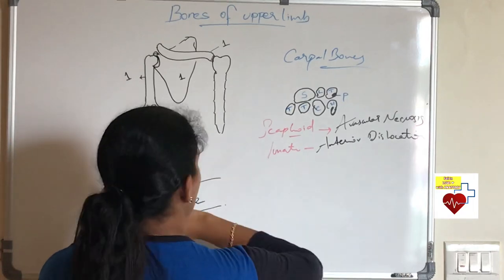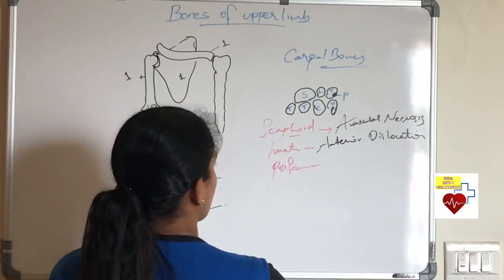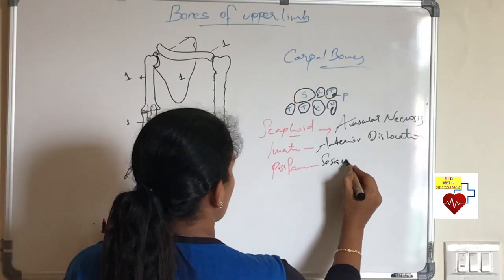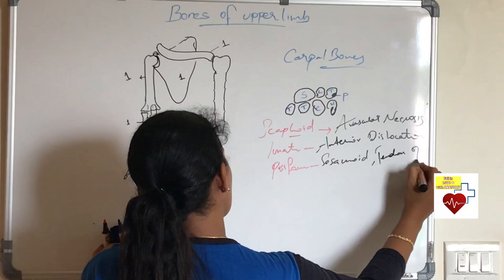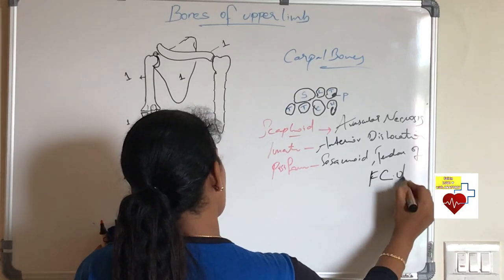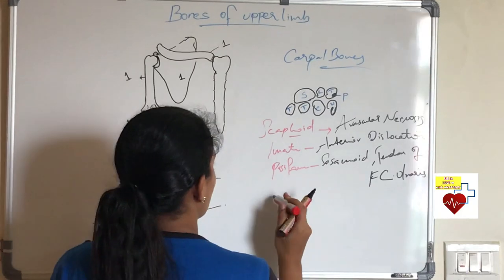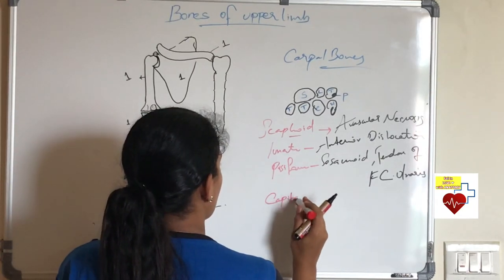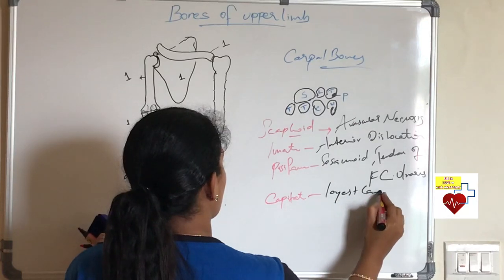Next comes the lunate. It is the most common bone to dislocate anteriorly. Next, nothing much about triquetral. Pisiform, you know it is a sesamoid bone. When you talk about sesamoid bone you should also tell in which tendon it is present. It is present in the tendon of flexor carpi ulnaris. Next comes your capitate, that is the largest carpal bone.